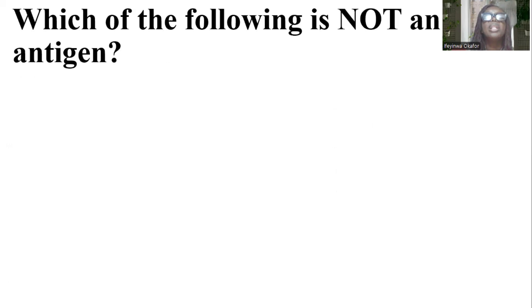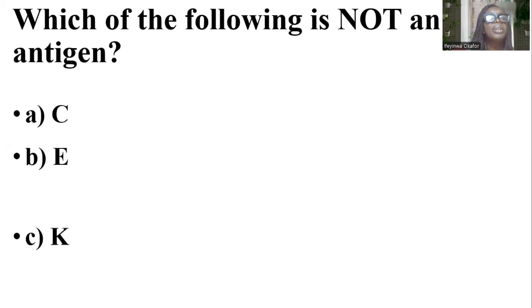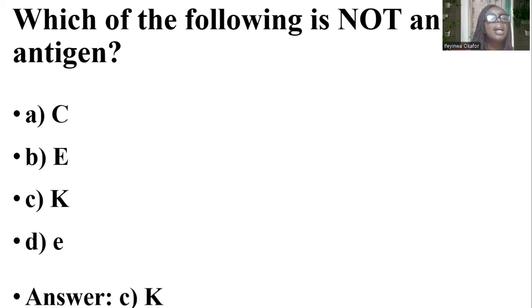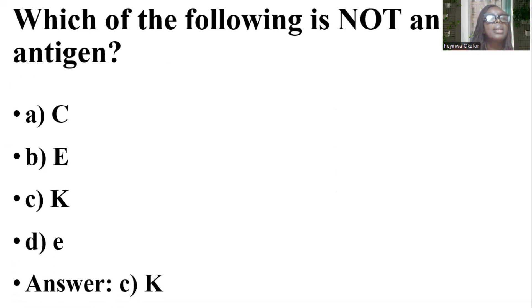Which of the following is not an RH antigen? The options are big C, big E, big K, and little e. And the answer is K — big K is not an RH antigen.